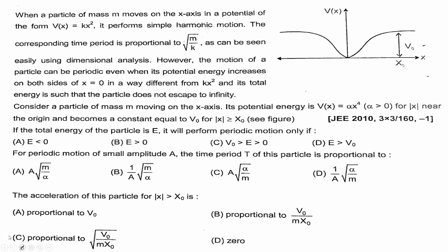So there are three questions associated with it. We need to find the total energy and time period among other things. Then the acceleration of the particle. First let's check out what they have given. When a particle of mass M moves on the x-axis in a potential of the form V(x) = kx² it performs simple harmonic motion. The corresponding time period is proportional to √(M/k), as can be verified by using dimensional analysis.